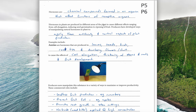Hormones are chemical compounds that are formed in an organism and affect the functions of the receptive organs. Because plants don't have a nervous system, they use hormones to control their growth and development. Hormones in plants are produced in different areas and cause different effects ranging from cell elongation and inducing seed germination to ripening of fruit. Producers have developed ways of manipulating natural hormones to apply them artificially and control aspects of plant production.